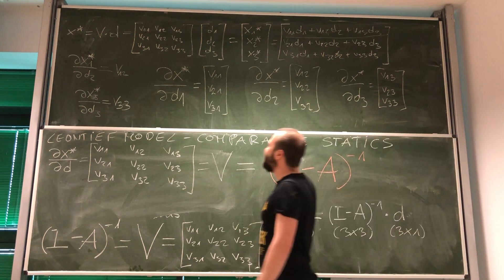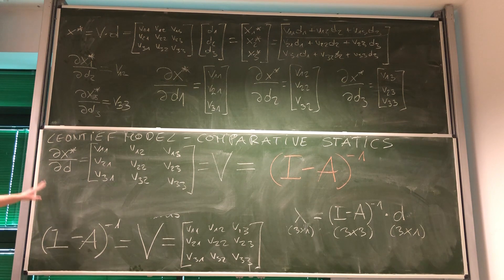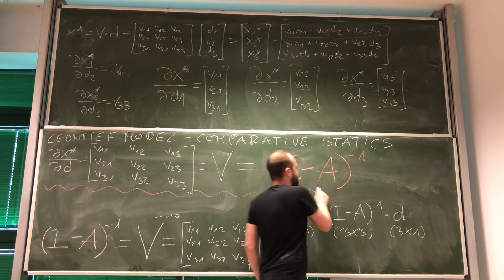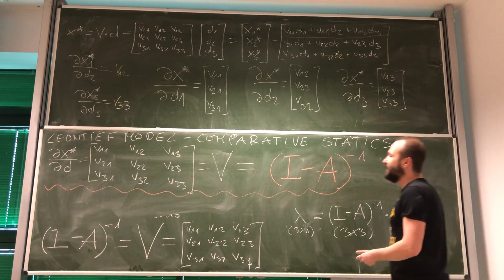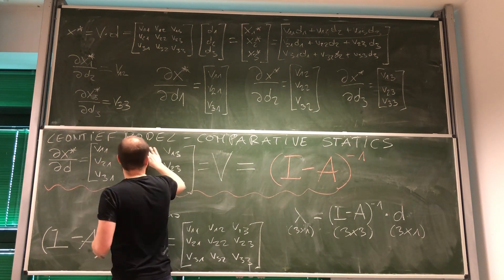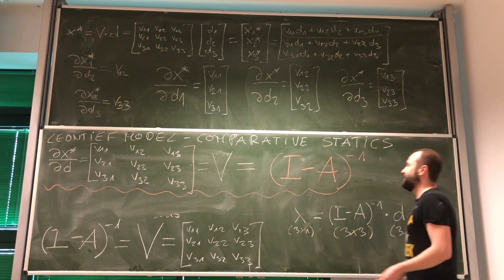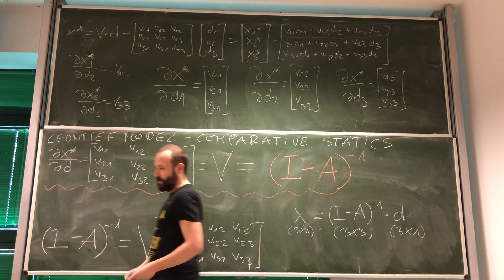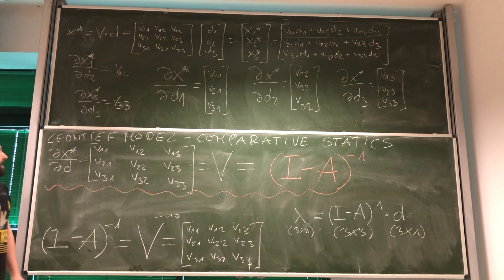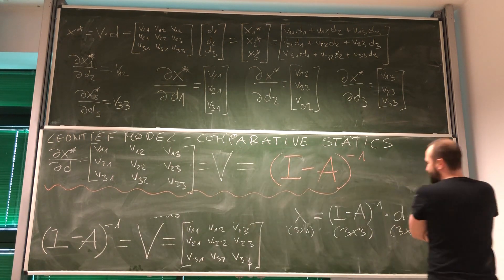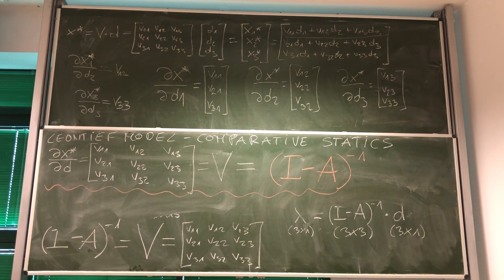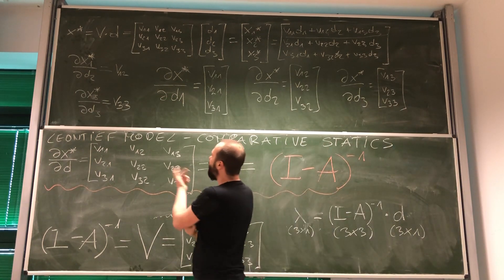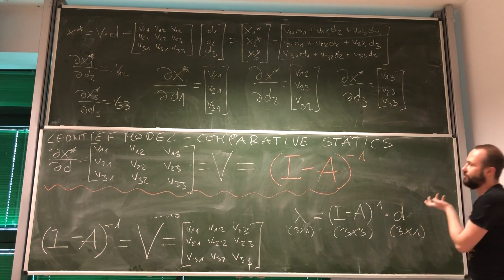It contains all comparative static derivatives in this system. So based on entries inside this matrix, we actually are getting comparative static derivatives of levels of production in the model with respect to final demands for those goods. So look, as it turns out, once you actually solve the model in a way that you found the inverted matrix, Leontief matrix, you already have all comparative static derivatives. So you don't need to calculate them.